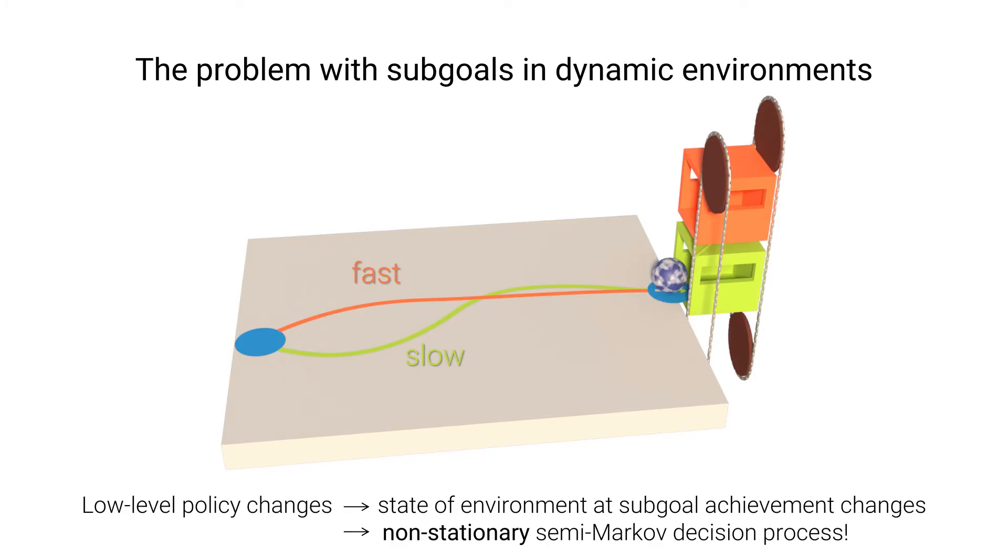So after an update to the low-level policy, the dynamic part of the environment, in this case the elevator, will be in a different state upon achievement of the subgoal.